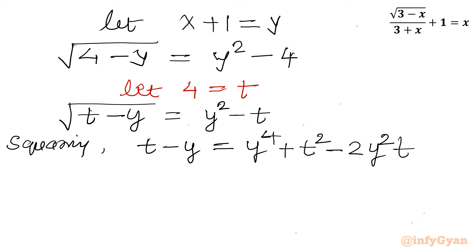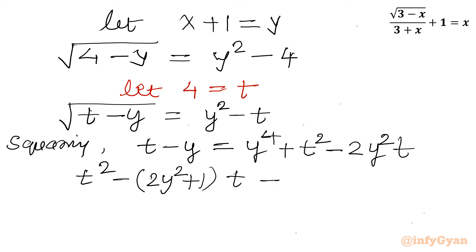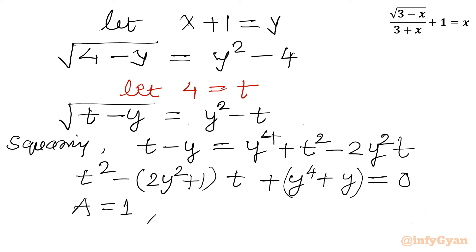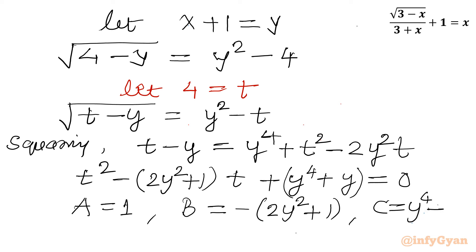Now I will take all terms to the right-hand side and frame one quadratic equation in t: t squared minus (2y squared plus 1) times t, then y to the power 4 plus y equals 0. This is a quadratic equation in t, where capital A equals 1, capital B equals minus (2y squared plus 1), and constant C equals y to the power 4 plus y.